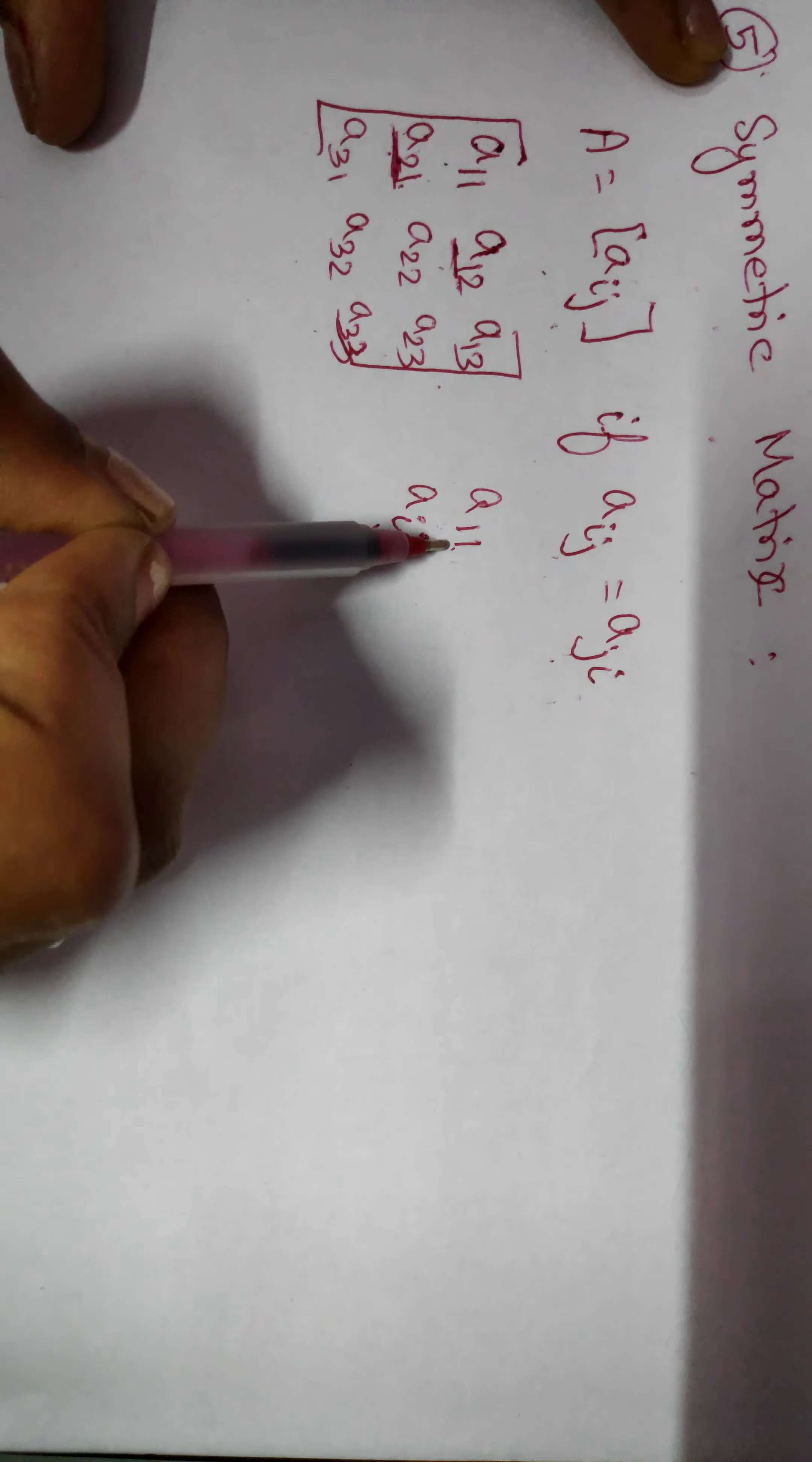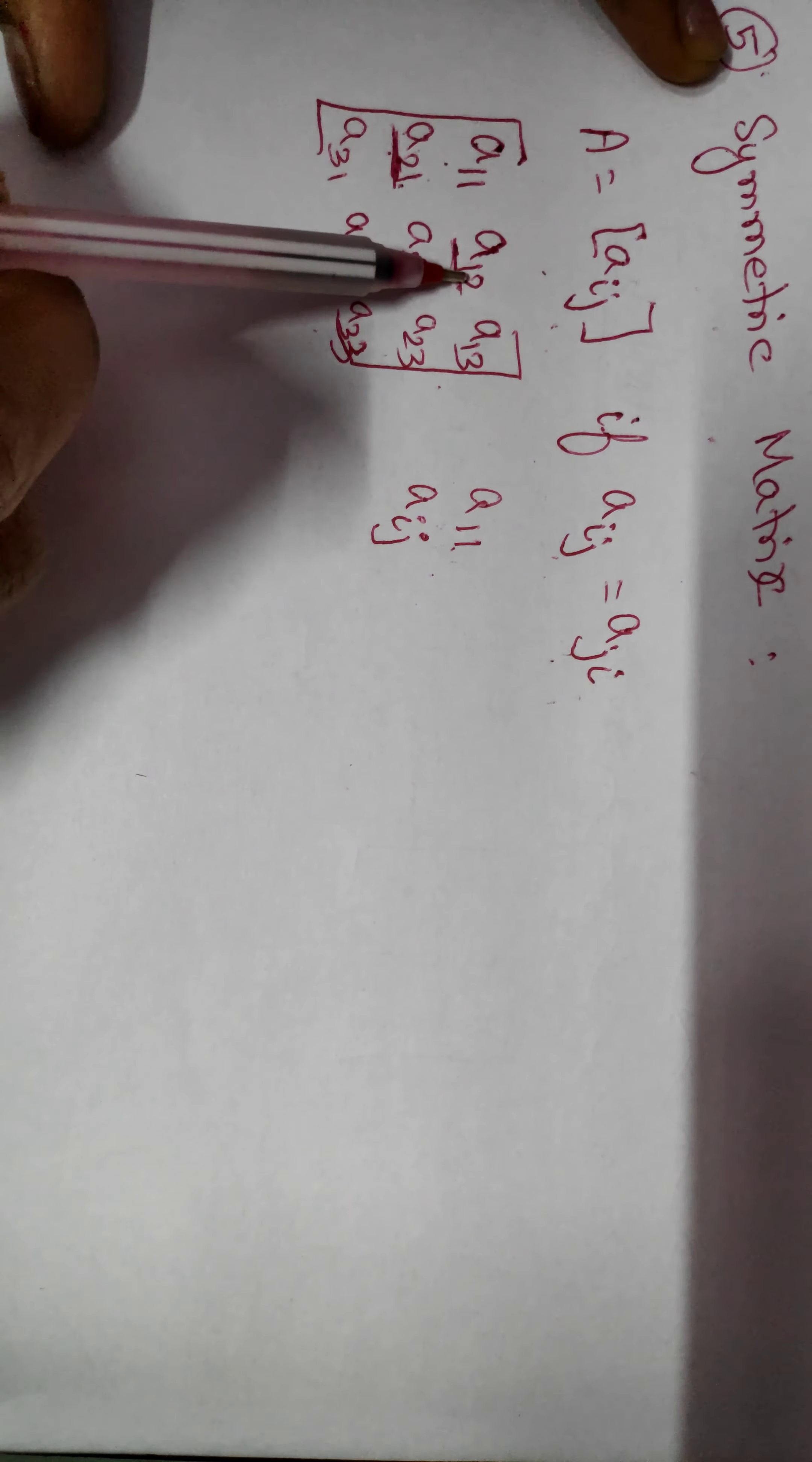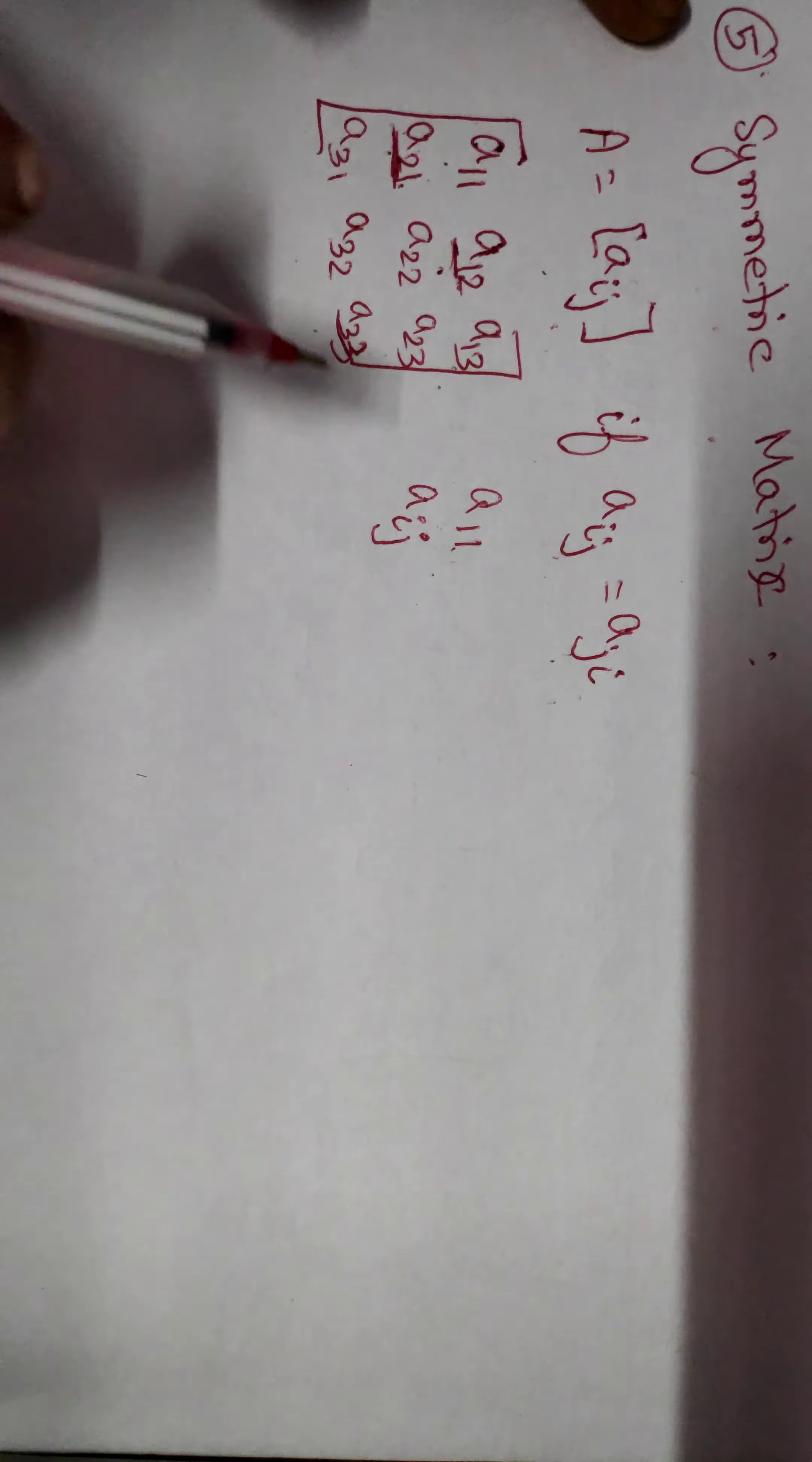First row and first column element is A11. First row, second column element is A12. First row and third column element is A13. Likewise, the remaining thing.